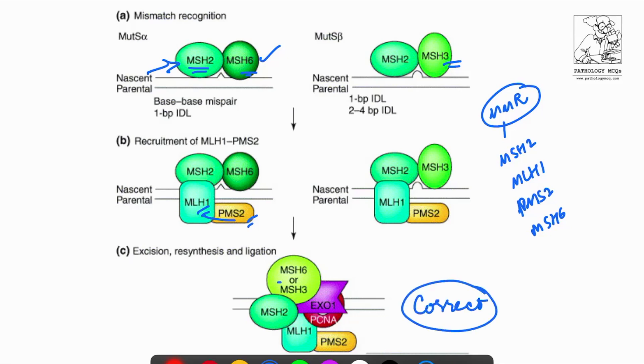So when this process does not happen, when one of these genes is lost, mismatch repair is deficient. When mismatch repair is deficient, that is when you get the terminology DMMR, which is also known as deficient MMR, which is seen in these colorectal carcinomas.